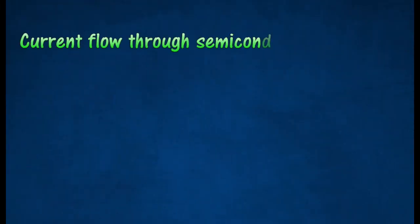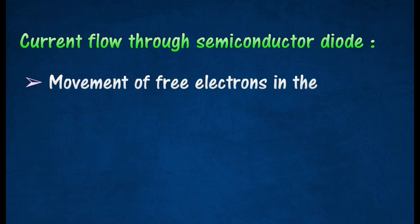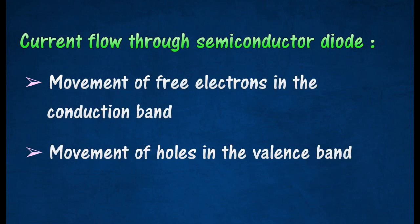There are two ways of producing current flow in semiconductor: the movement of free electrons in the conduction band, and movement of holes in the valence band.